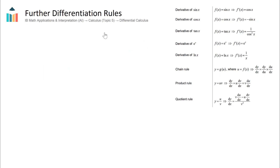In this video we are going to go through all of the further differentiation rules which are all of the differentiation rules we need to know if we are an AI HL student. For HL students studying the Applications and Interpretation course, you have all of these additional differentiation rules as part of your Topic 5 Calculus.